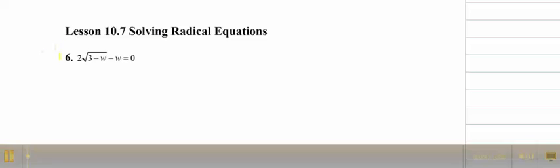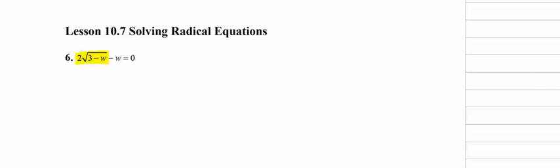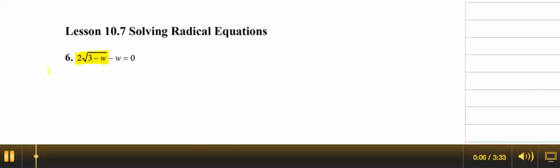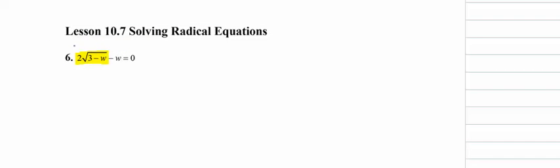On this example, let's look at the radical expression. It's right here. It's 2 square root of 3 minus W, and then the minus W that you see after that is outside of it.